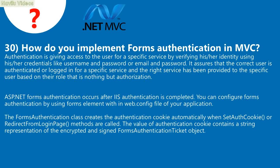Question 30: How do you implement forms authentication in MVC? Authentication is giving access to a user for a specific service by verifying their identity using credentials such as username and password. Authorization ensures the correct user is logged in and the right service is provided based on their role. ASP.NET forms authentication occurs after IIS authentication is completed. It is configured using the forms element within the web.config file. The FormsAuthentication class creates the authentication cookie automatically when SetAuthCookie or RedirectFromLoginPage methods are called. The authentication cookie contains a string representation of the encrypted and signed FormsAuthenticationTicket object.